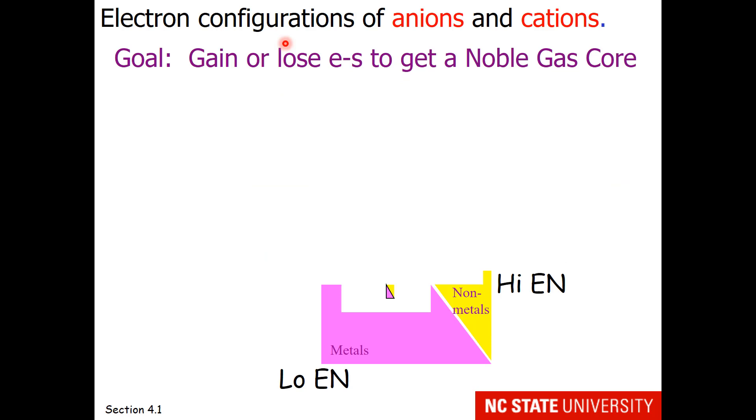When we think about the electron configurations of anions and cations, the goal of elements is to gain or lose electrons to get a noble gas core, since those are very stable.